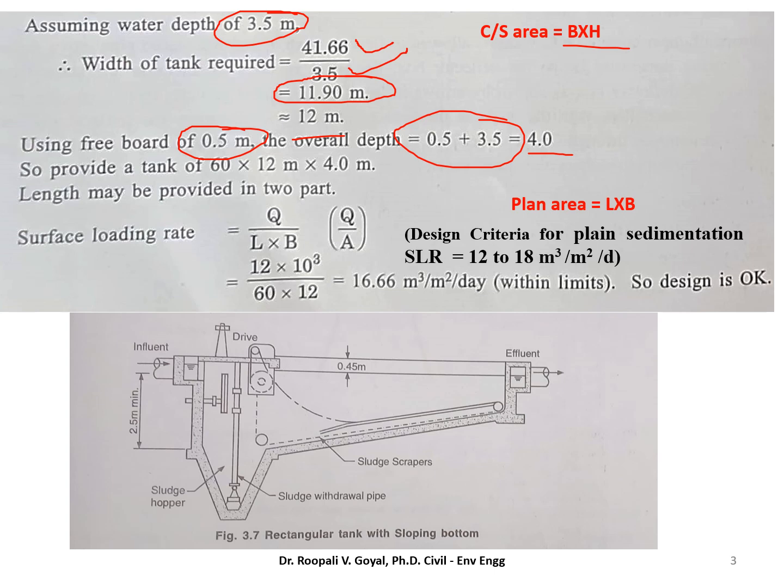So ultimately the tank size is 60 meter length by 12 meter breadth by 4 meter overall depth. And length may be provided into 2 parts. Now always we are checking the surface loading rate. And surface loading rate is given by Q upon A. And we call it A because the surface loading rate is related to your vertical velocity.